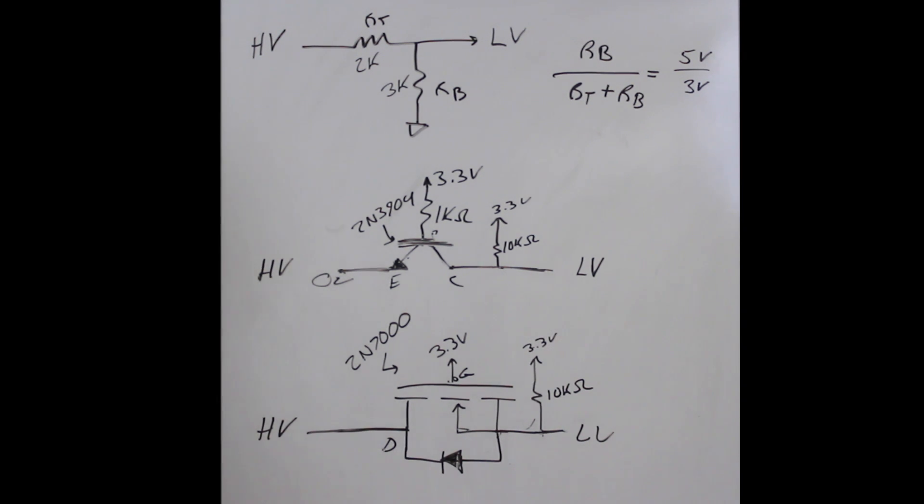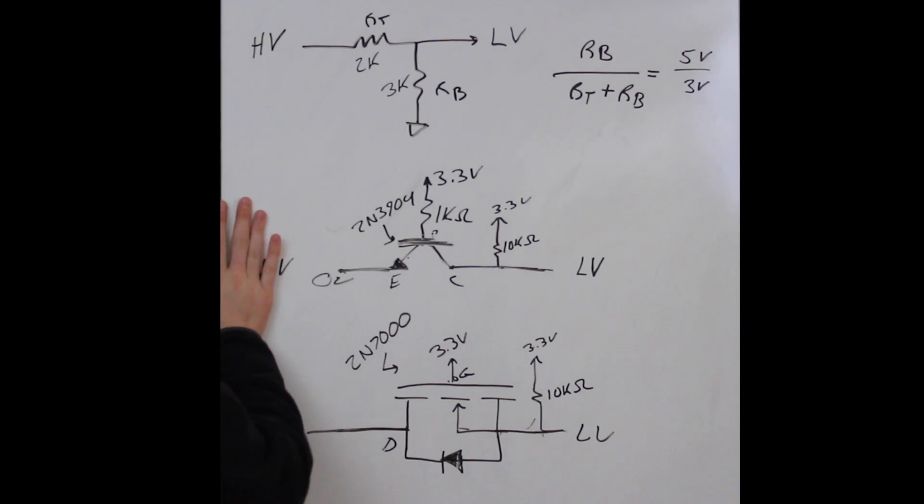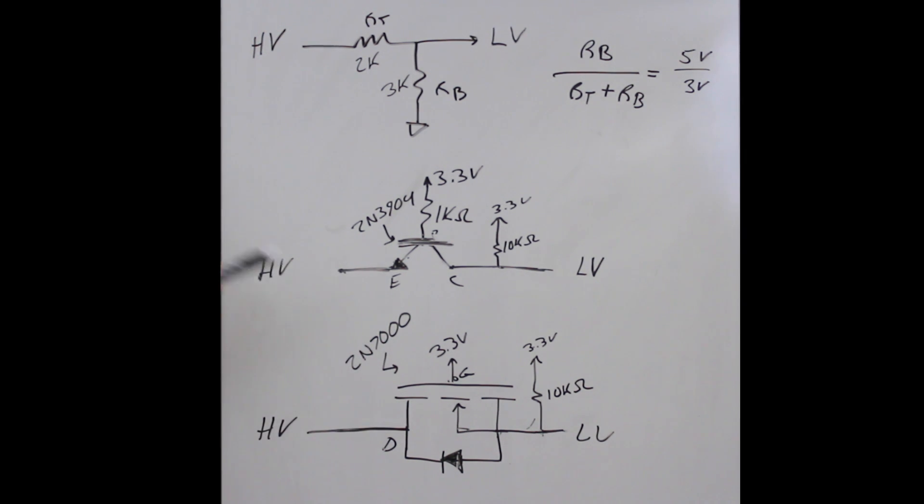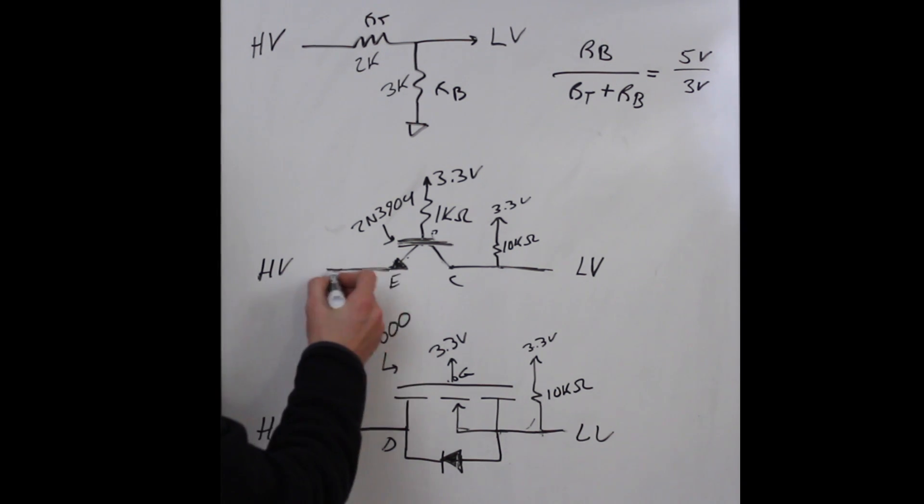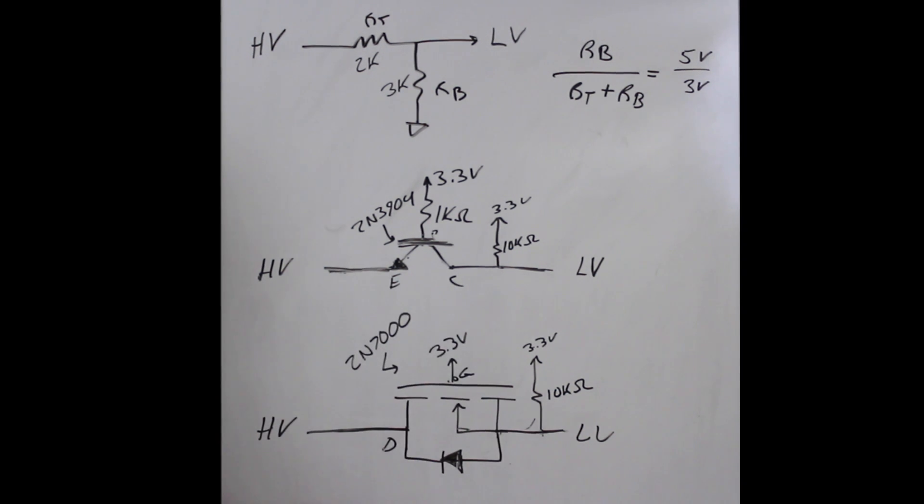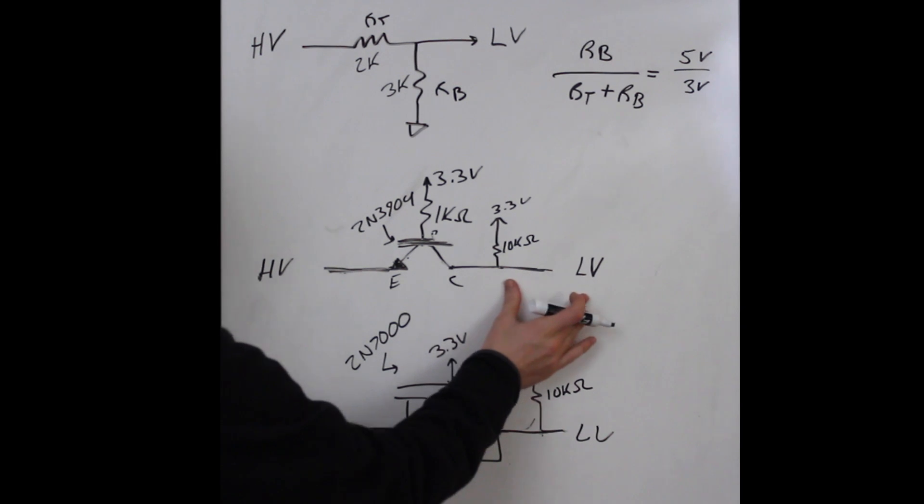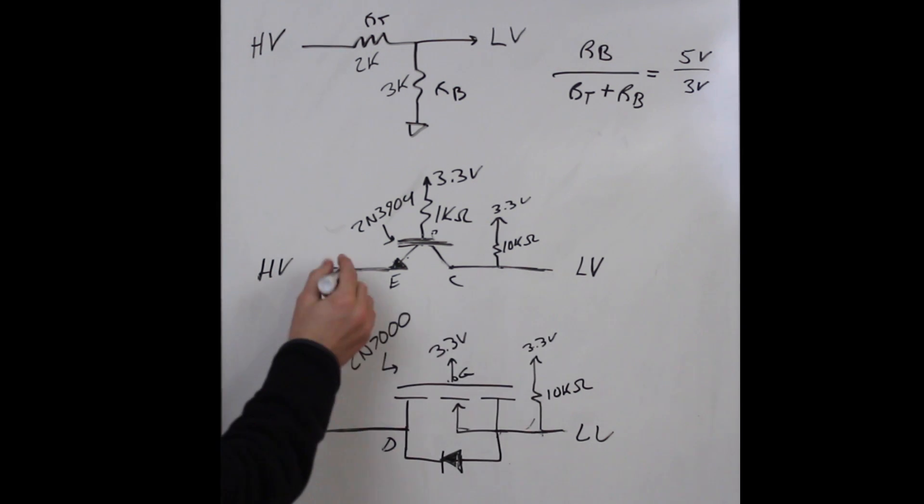What's cool about this is that this whole thing is bi-directional. So if you wanted to shift from 3.3 back up to 5 volts, you can do that. Let's pull up the emitter to 5 volts with a 10k resistor.